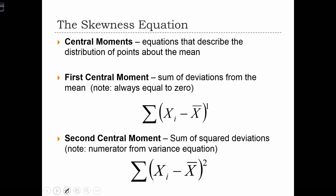The first central moment is just the sum of deviations from the mean. We've already seen this in looking at the properties of the mean, and we know that the first central moment always equals zero.